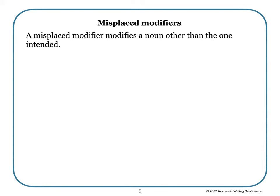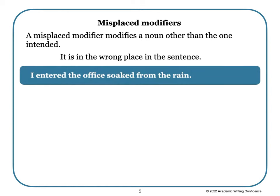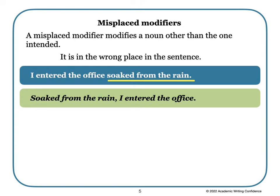A misplaced modifier modifies a noun other than the one intended — it is in the wrong place in the sentence. For example: 'I entered the office soaked from the rain.' Because it was not the office that was soaked from the rain, we need to move the modifier phrase to a different place in the sentence. Now the words 'soaked from the rain' are connected to the word 'I' — I was soaked from the rain, not the office.